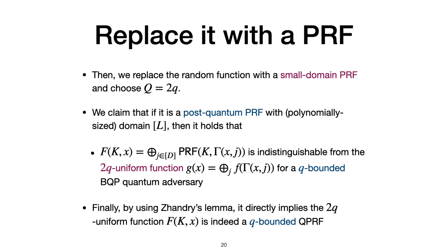Then, we replace this truly random function with the small domain PRF and choose q equals to 2Q. We claim that if this small domain PRF is post-quantum, then it holds that fx is indistinguishable from the 2Q Uniform function gx for any q-bounded BQP distinguisher. Finally, by using Zandry's lemma, we are done. We will get a q-bounded QPRF.